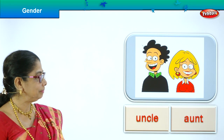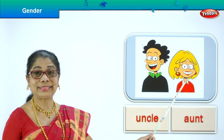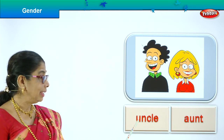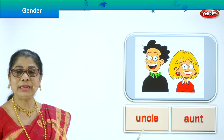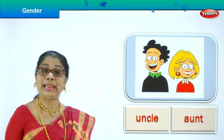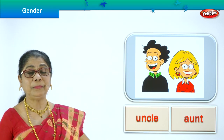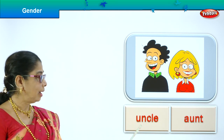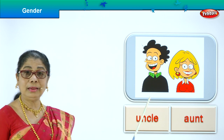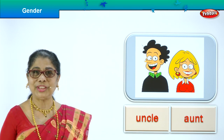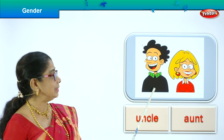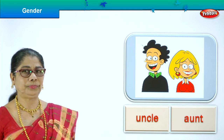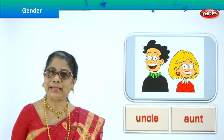Who comes to visit you with gifts on your birthday? Uncle and aunt. Uncle can be daddy's brother or mummy's brother. Aunt can be mummy's sister or daddy's sister. Uncle is masculine, aunt is feminine gender. Are you enjoying this? Uncle, aunt.